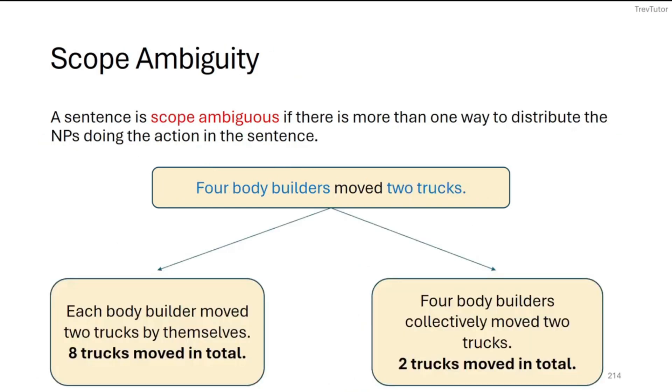The last one is scope ambiguity. And you'll see scope ambiguity with words like every and some when you have a subject and direct object that each use one of those different terms, or you see them with numbers. So if you have a number term in the subject and a number term in the direct object, and they are either similar or different, we see scope ambiguity.